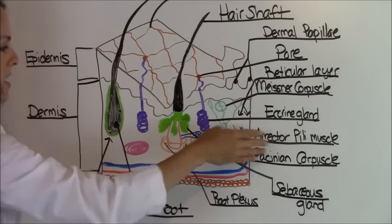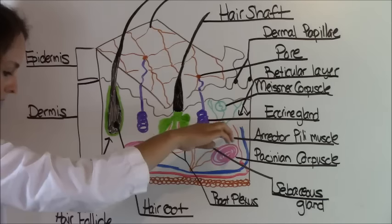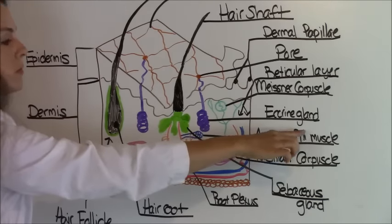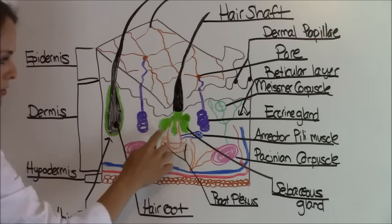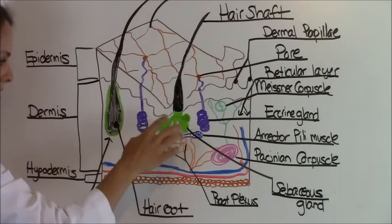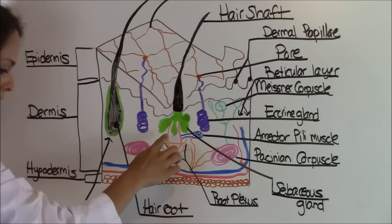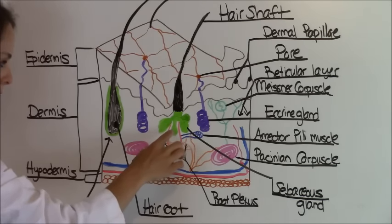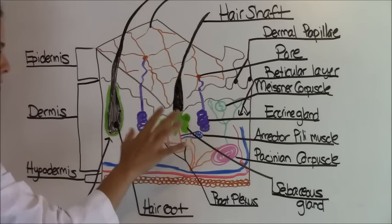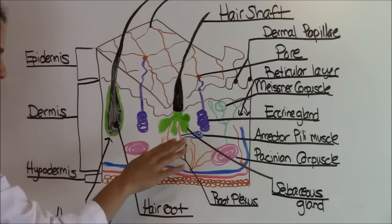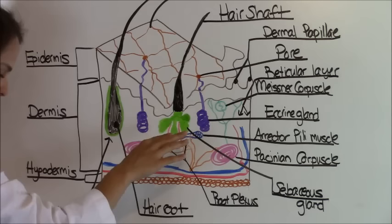Next, around the erector pili muscle are sebaceous glands, these little green things right here. Sebaceous glands are known as oil glands. They produce an oily product called sebum and they're found everywhere except for the palms and soles of your body. So remember that, no sebaceous glands on the palms or the soles.